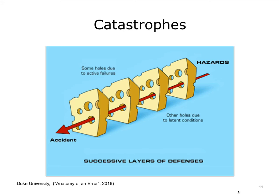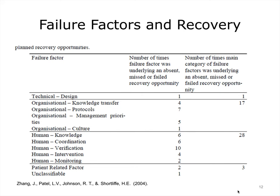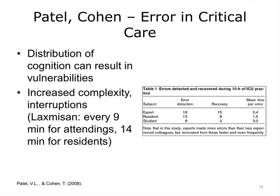If the layers are set up with all the holes lined up, this is an inherently flawed system that will allow a problem at the beginning to progress all the way through to adversely affect the outcome. This table shows failure factors under the headings of technical, design, and organizational culture — the number of times the factors were underlying a missed, absent, or failed recovery opportunity. Distribution of cognition, which takes place not only in individual humans but across the entire system of tools, information, and people, can result in vulnerabilities that can lead to errors.